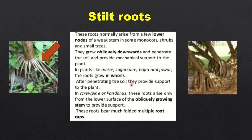In plants like maize, sugarcane, bajra, and jowar, the roots grow in whorls — meaning clusters. After penetrating the soil they provide support to the plant. In screw pine or pandanus, these roots arise only from the lower surface of the obliquely growing stem. These roots bear much-folded multiple root caps — an important note if you get a question about where multiple root caps are found.